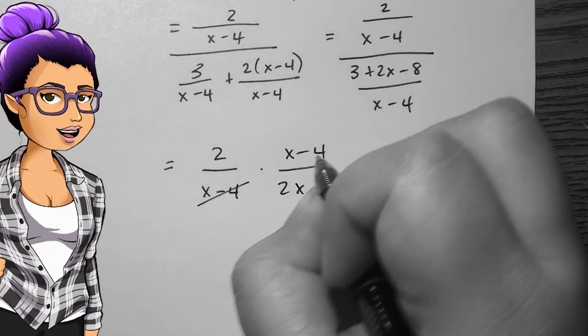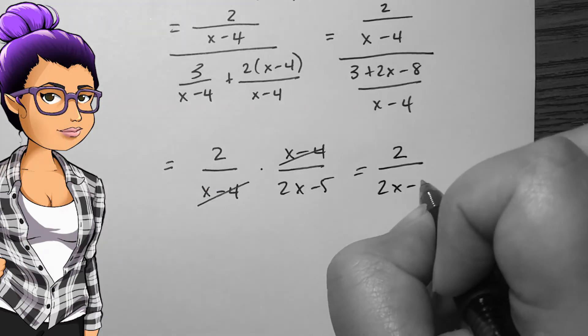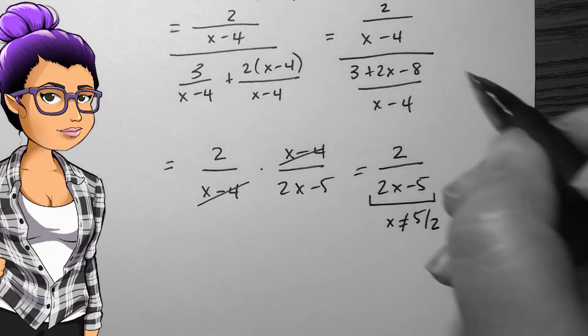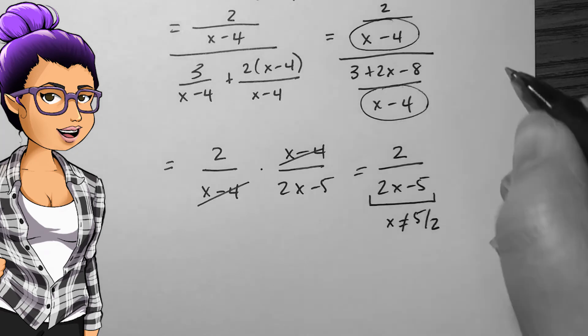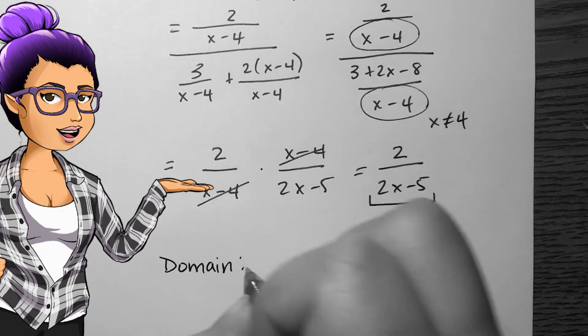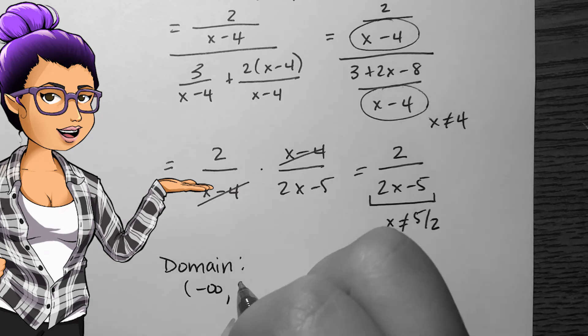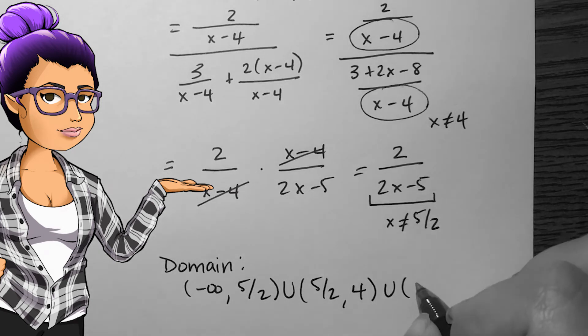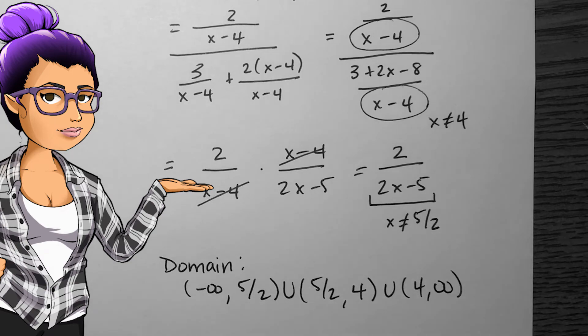Now, I want the domain of this. Using the methods we've used before, it looks like I should be leaving 5 over 2 out of the domain. This is not the only number I should leave out though. Looking at my inside function f of x, 4 does not make a good ingredient here, so I'll also leave this number out of the composition's domain. Our domain is everything except 5 over 2 and 4.